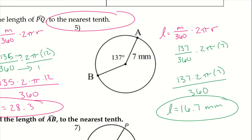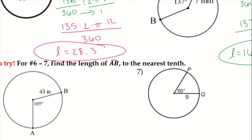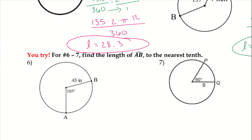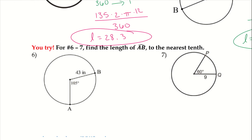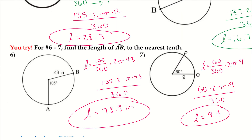All you need to figure out is the measure of the arc and then use the radius — or if you're given the diameter, you can also use the diameter. Go ahead and pause the video and try numbers 6 and 7. Here are 6 and 7 — you can pause the video again if you need a little more time to look at the solutions.